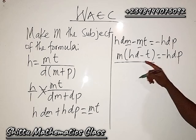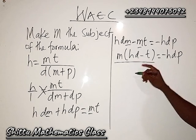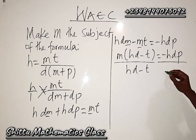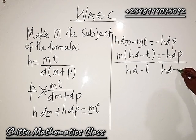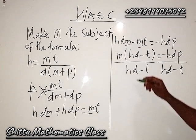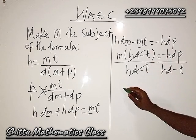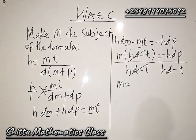Now from there, I can simply divide both sides by (h·d minus t). You can see that this cancels, this cancels, we have m equals...